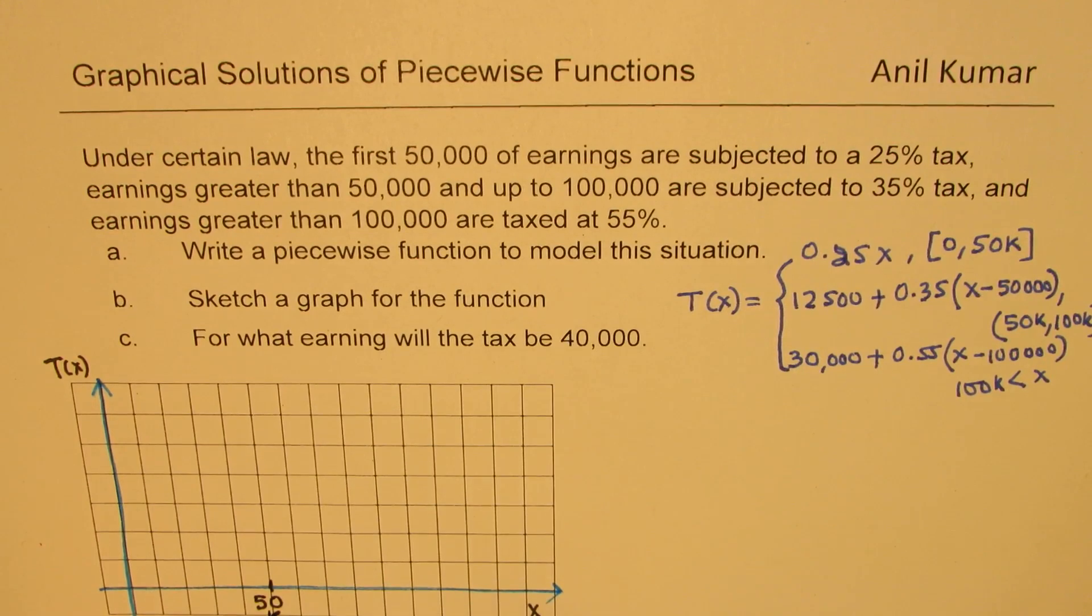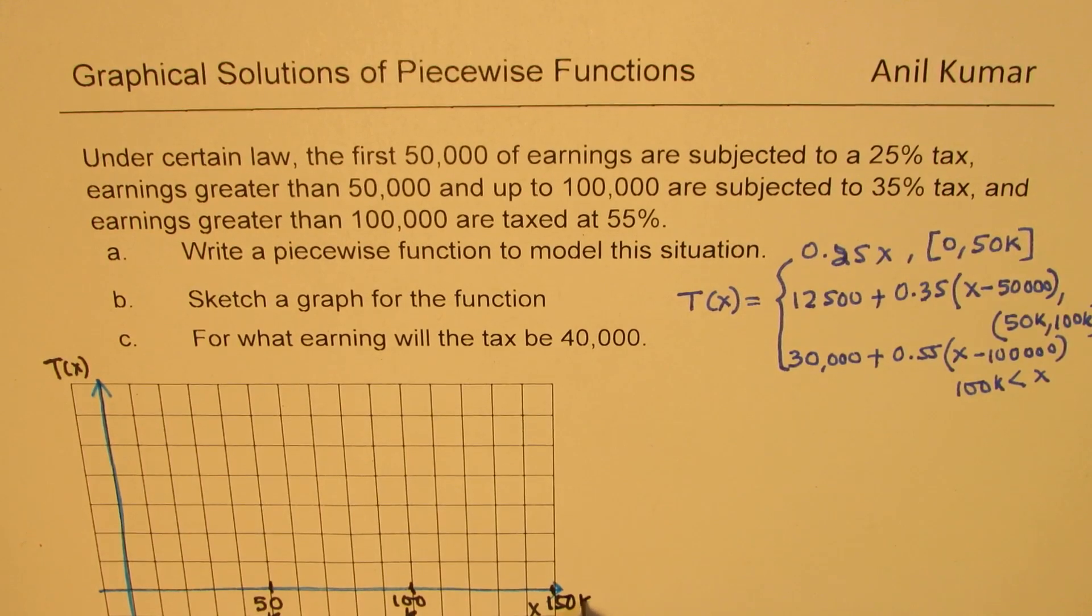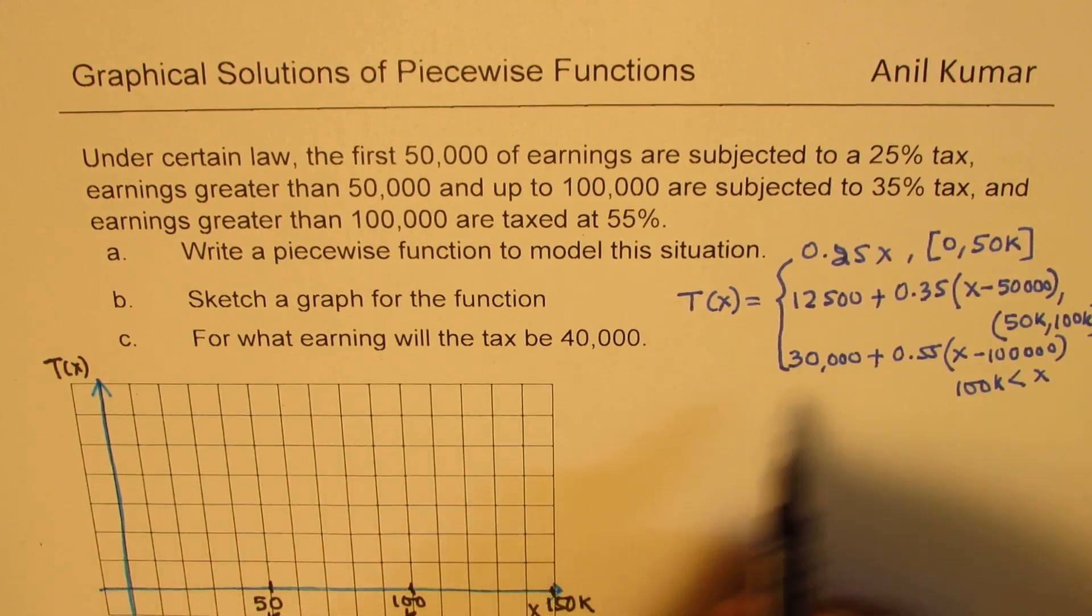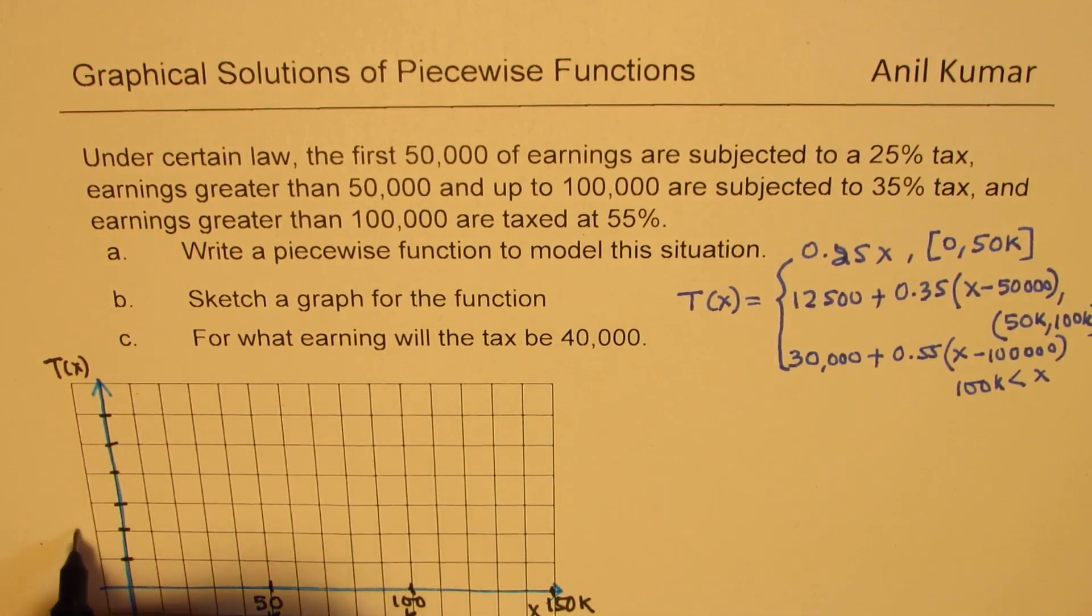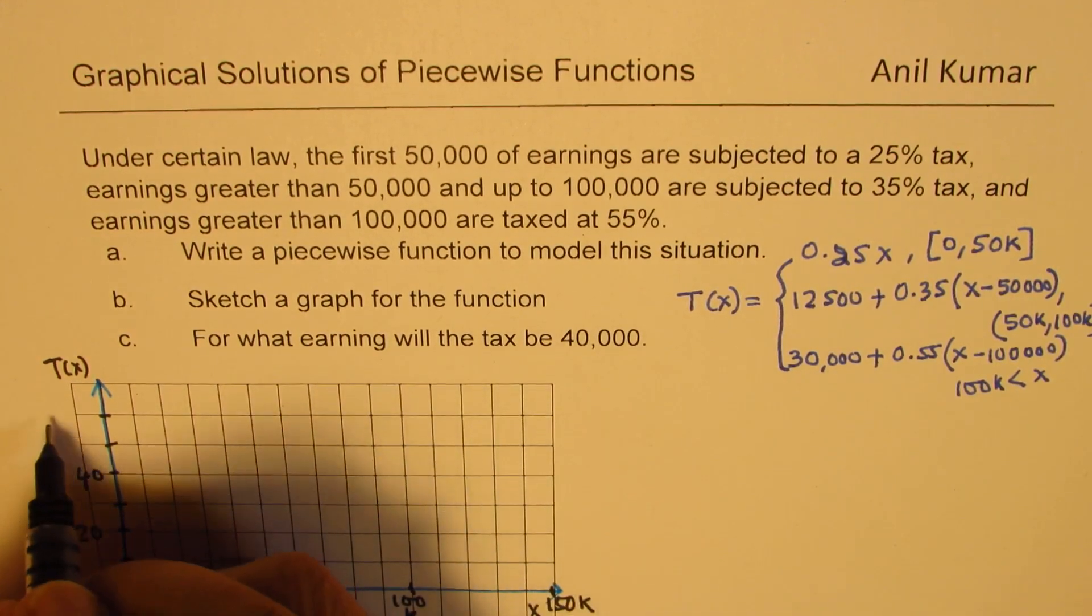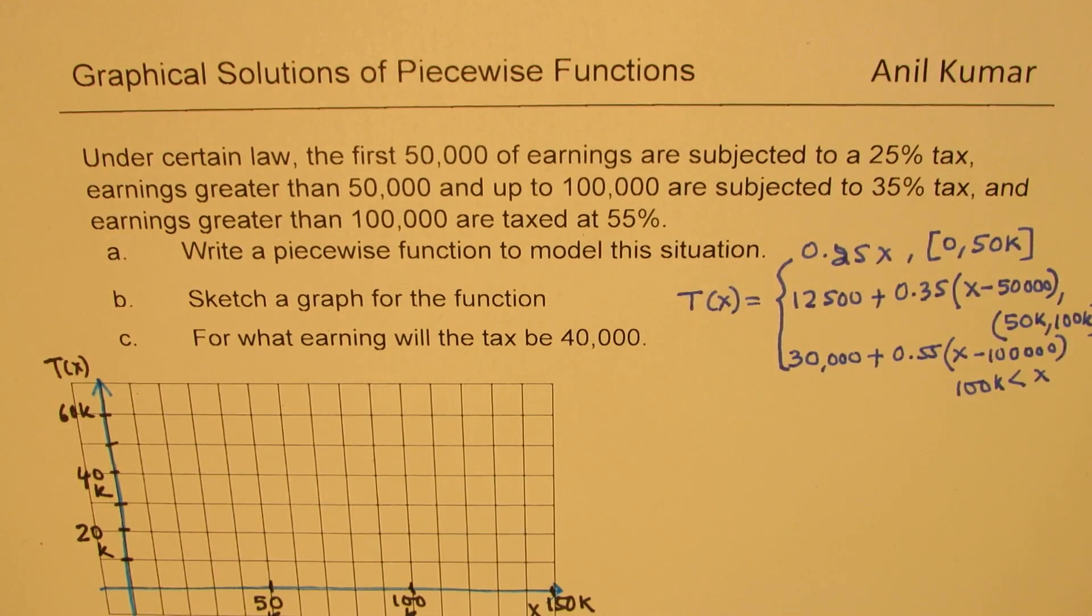Let's say this is 50,000, so we say 50K. That becomes 100,000. That becomes 150 for us. K for thousands. And here, the amount is in tax. We worked out some values like 12,500, 30,000, and so on. Let's say 10, 20, 30, 40, 50, 60. So let this be 20, this be 40, 60K. K means 1,000 for us. So those are the earnings.